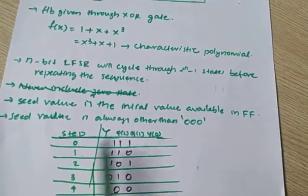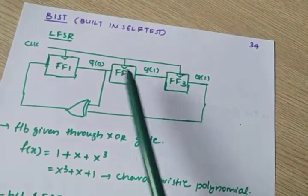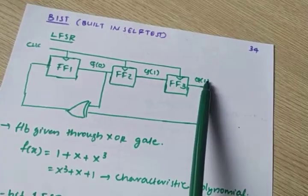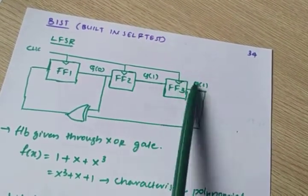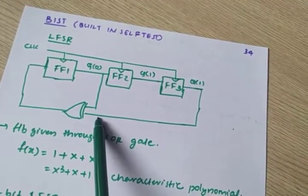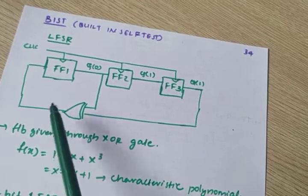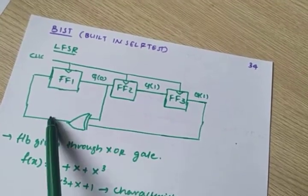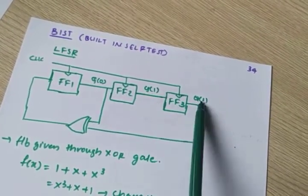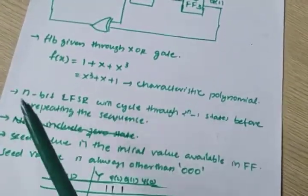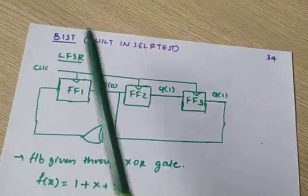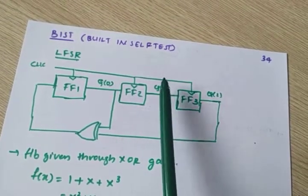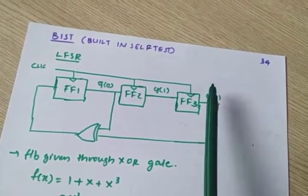By giving the first clock, what happens is a bit shifts from each stage to the next. In the 1 1 1 condition, the XOR of the two feedback lines gives 0. That 0 comes into the first stage. After the first clock, the output becomes 1 1 0.